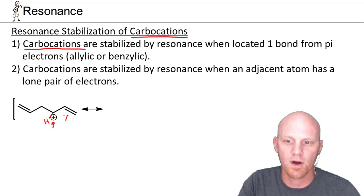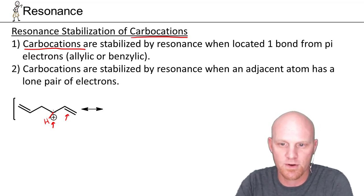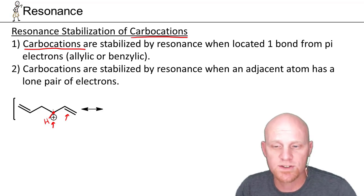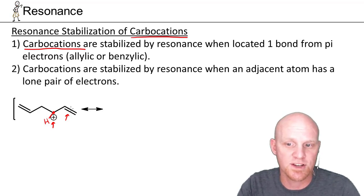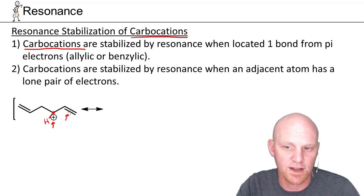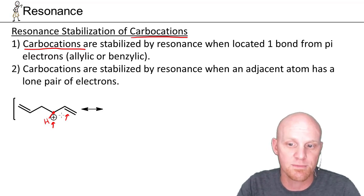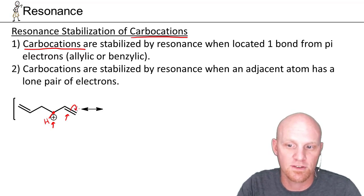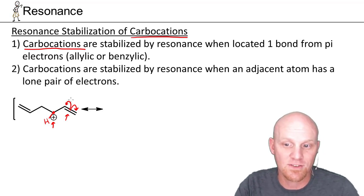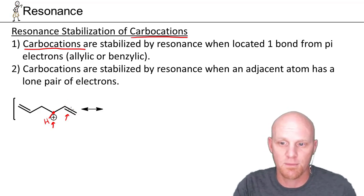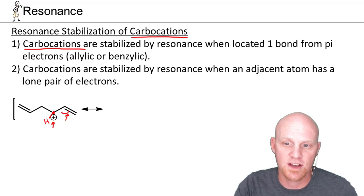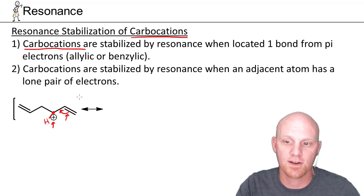Our goal in moving electrons is to get the carbocation carbon its fourth bond so it won't be positively charged anymore. Pi electrons can move to an adjacent atom or an adjacent bond. Moving them to either adjacent atom doesn't get us that fourth bond, so we ignore those possibilities. But we can move them to the adjacent bond, and that will give the carbocation carbon a fourth bond.